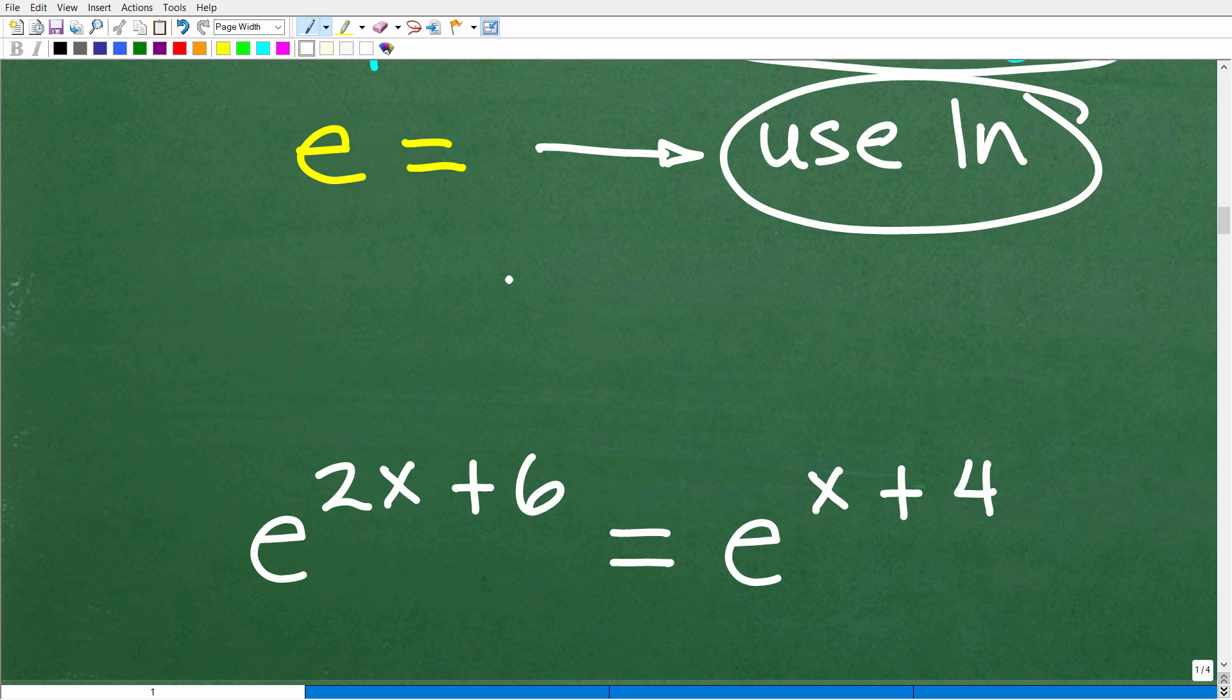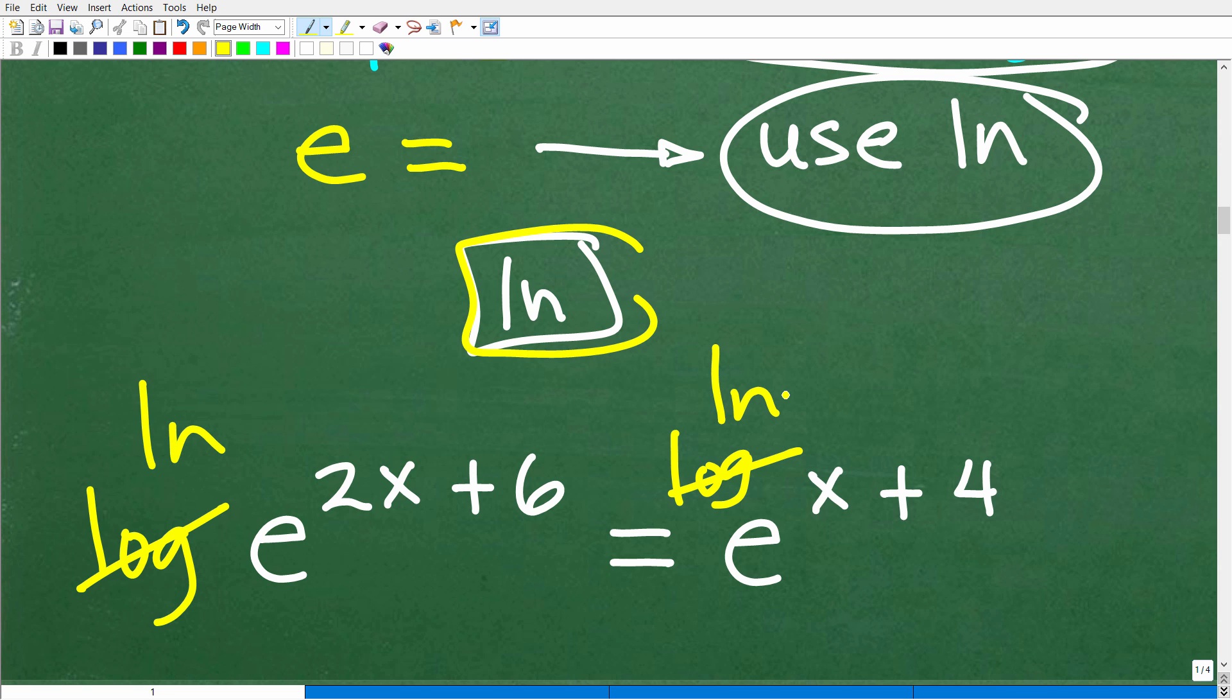When you have E as the natural base, you're going to use the LN button, and it has its own dedicated little button on your calculator as well because that's how important E is. So let's go ahead and get into exactly how to solve this equation now. We're going to use logarithms, and specifically, we're going to use LN. When you have an exponential equation, what you're going to do is take the log of both sides, the LOG of both sides. But in this case, we're not going to take the LOG of both sides. We're going to take the LN of both sides, which again, is still taking the logarithm of both sides.